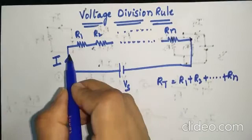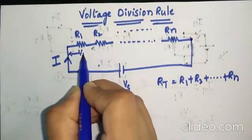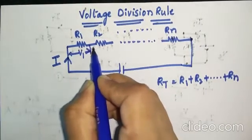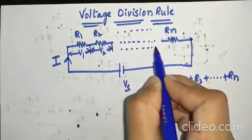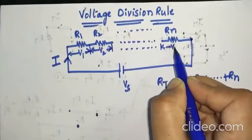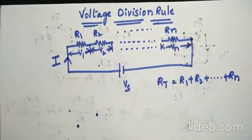Now let us assume the voltage across R1 is V1, across R2 is V2, and so on. The voltage across Rn is Vn.